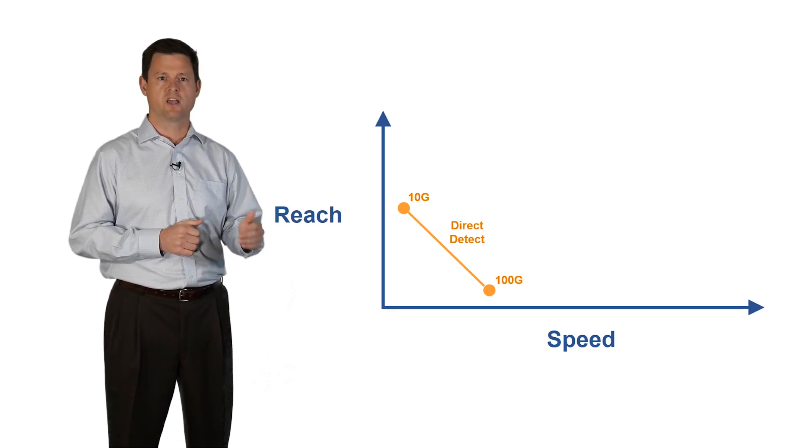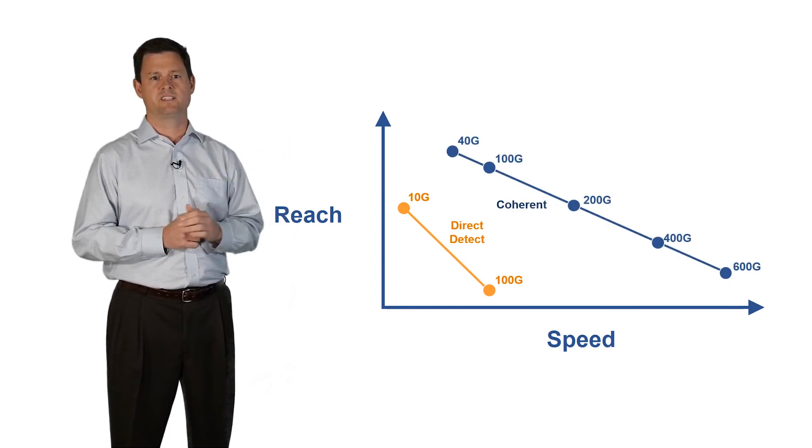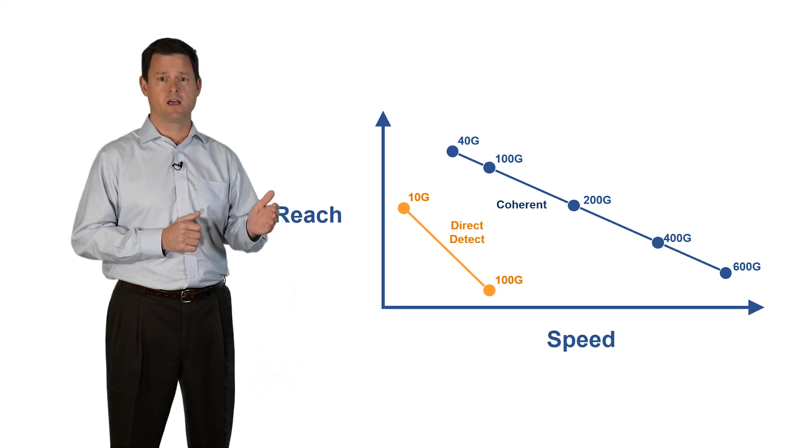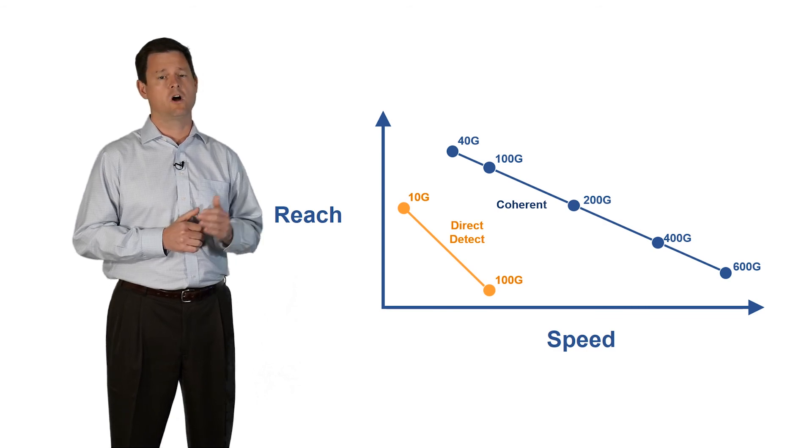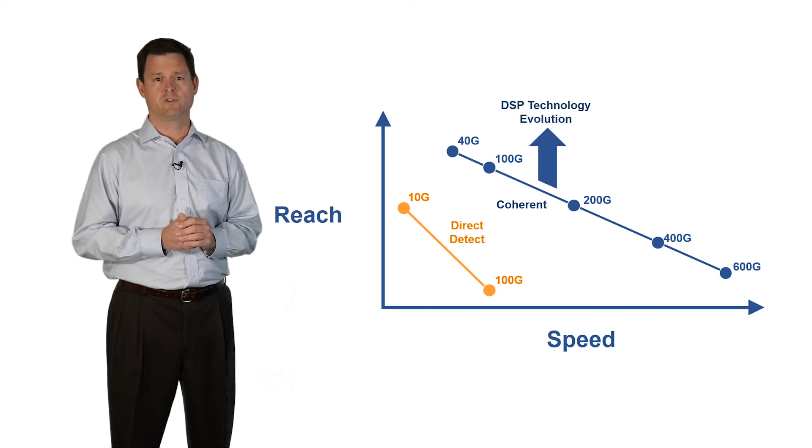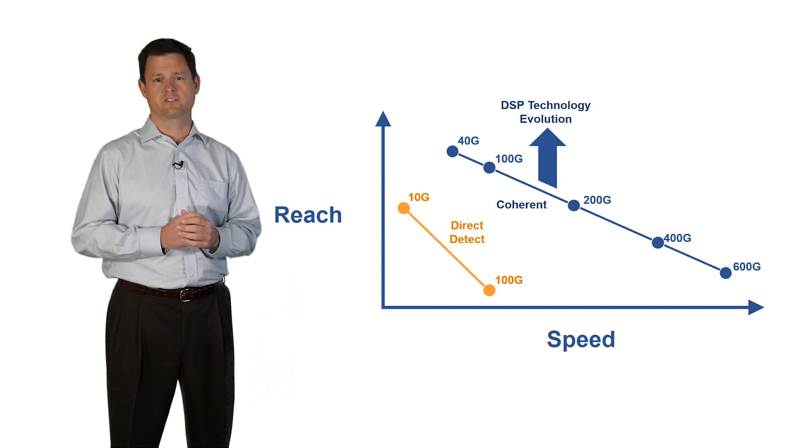With coherent receivers, the reach goes way up by using techniques like phase shift keying, polarization mode multiplexing, and digital signal processing. And the performance of coherent-based transmissions will only continue to improve with advancements in digital signal processor technology.